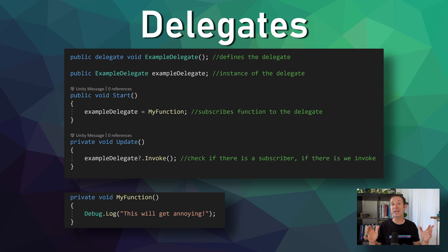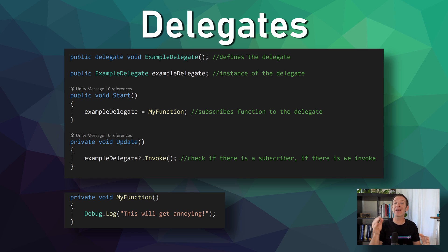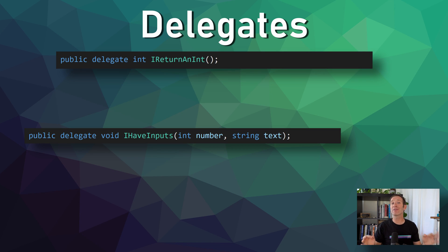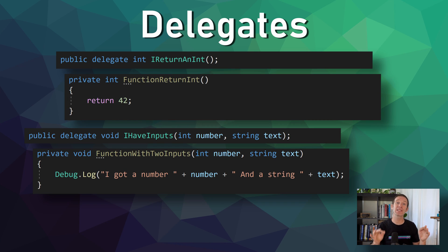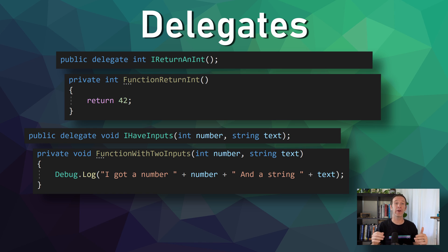Now, to be clear, this is a simple implementation, not necessarily how it should be done, but I want to walk through the delegates step by step and not jump straight into the shortest and most abstract syntax. Delegates can have multiple input parameters and can even have a return value or both. It's important to note that any function subscribed to a delegate must have the same type of input parameters and the same return value type, in order not to throw an error.